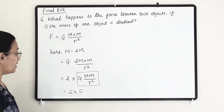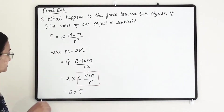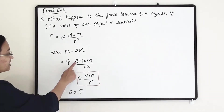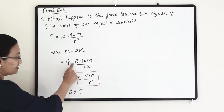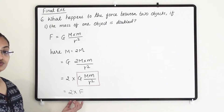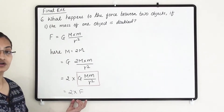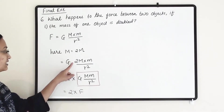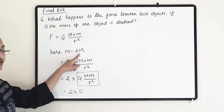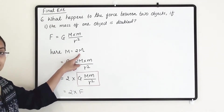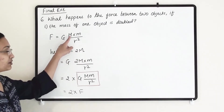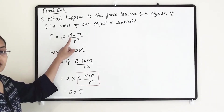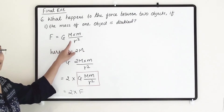As a result, when we make the mass of one object double, our force will also double. The force is directly proportional to the mass of the object.